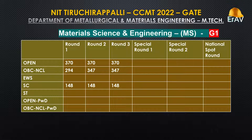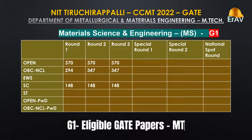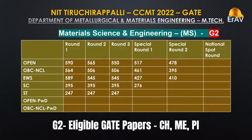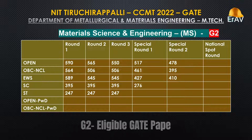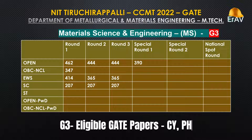Materials Science and Engineering — Group 1: Eligible GATE Papers: Metallurgical Engineering (MT). Group 2: Eligible GATE Papers: CH, ME, PI. Group 3: Eligible GATE Papers: CH, ME, PI; also Chemistry (CY) and Physics (PH).